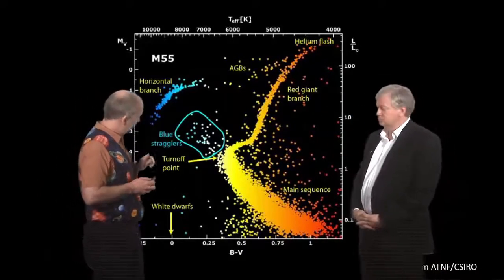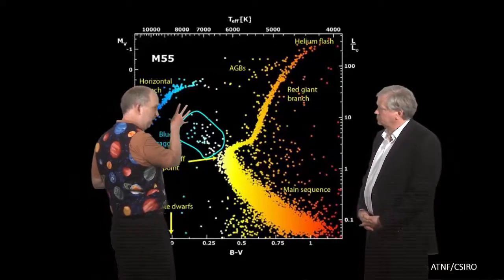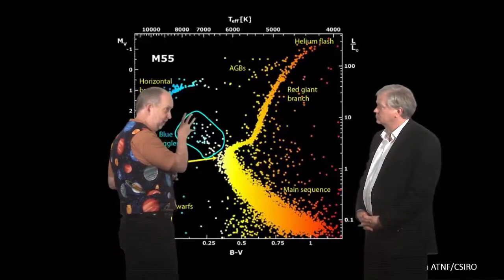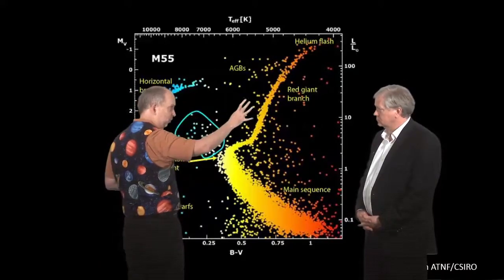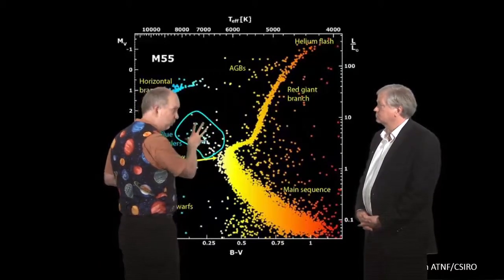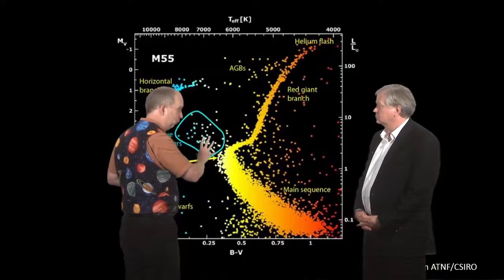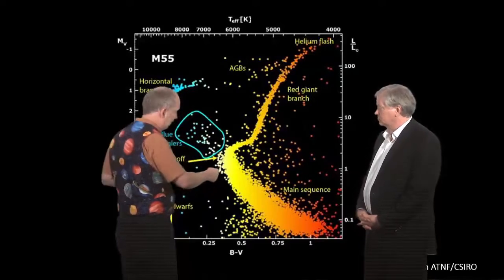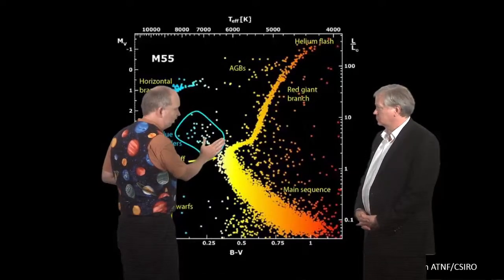And what's happened here is, originally there would have been a main sequence all the way up here, but these stars would have come to the end of their lives, stopped burning hydrogen, and moved off the main sequence and exploded. And then the slightly lower mass ones would have moved off, and so on and so forth. So by now, after 10 or 12 billion years, all the main sequence stars above there have gone.